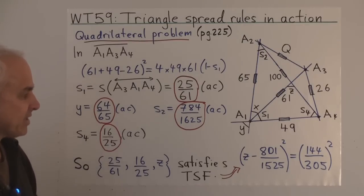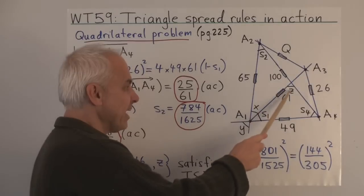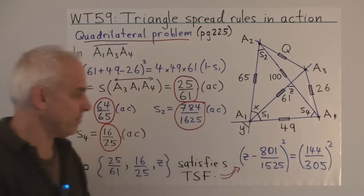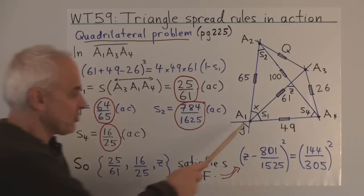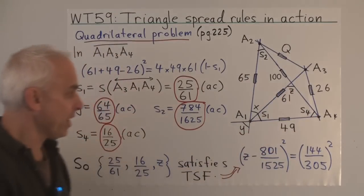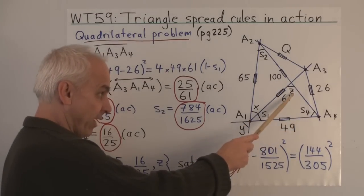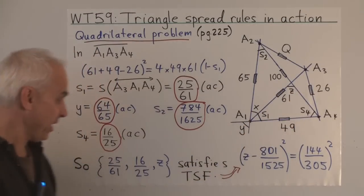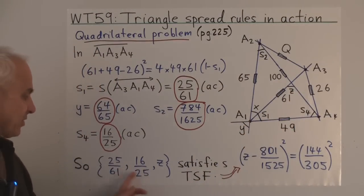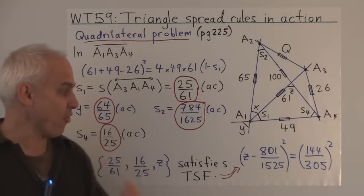Our next aim is to calculate the spreads X and Z. First we concentrate on Z. In the triangle A1, this point, and A4, we have three spreads: S1, S4, and Z. We know S1 and S4, so we can find Z because these three numbers must satisfy the triple spread formula.